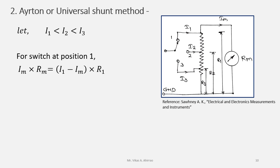First, we can write im into rm equals i1 minus im into r1. Rewriting this for the value of r1, r1 equals rm upon m1 minus 1. So this equation is similar to the earlier method, that is the individual shunt method.